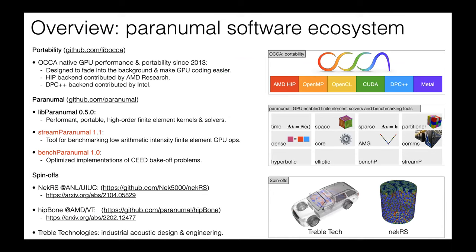My team and collaborators at CEED have created an ecosystem of benchmarking tools, libraries, and reference solvers for GPU-accelerated finite element solvers. At the bottom level we use our low-level portability layer called OCCA. It's designed to fade into the background to make GPU coding easier. We have numerous backends including an AMD HIP backend contributed by Noel Chalmers at AMD Research, and a DPC++ backend contributed by Intel. So all the codes we're talking about today are available for day-one runs on Aurora and Frontier.